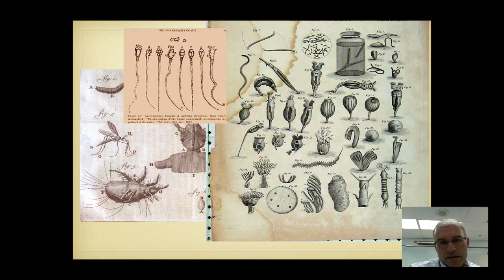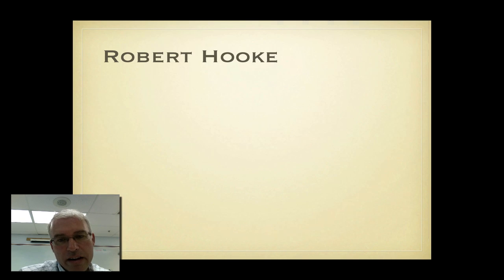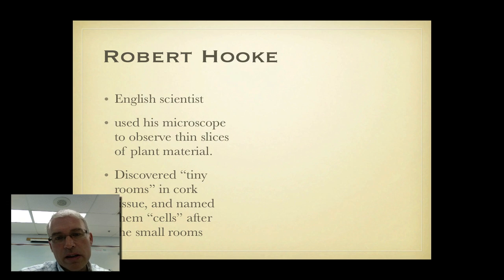Here are some pictures from Anton von Leeuwenhoek's notebooks. He drew very well and very carefully the objects that he saw. A lot of these objects are small animals that are multicellular and you'll notice in the upper left hand corner some pictures of sperm cells that he observed. A very good artist, of course they didn't have photography back then, he kept very good notes and so we know exactly what he looked at.